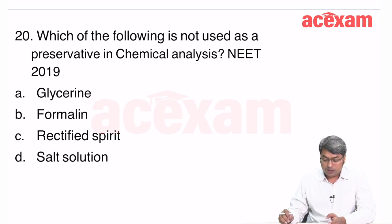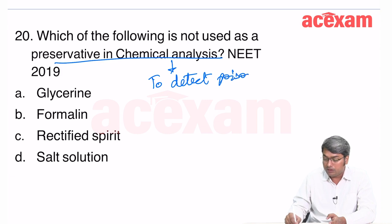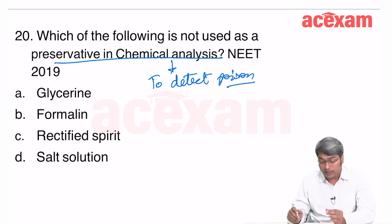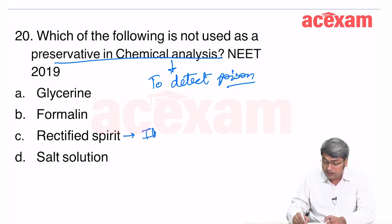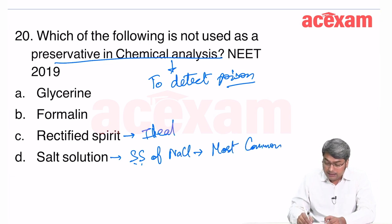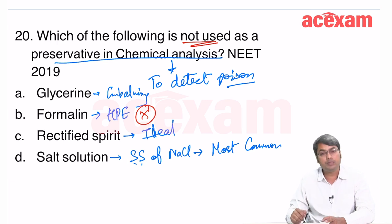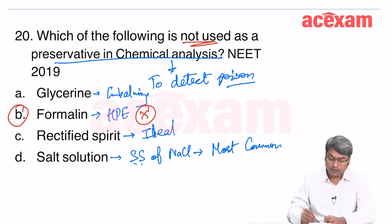Which of the following is NOT used as a preservative in chemical analysis for poison detection? Rectified spirit is the ideal preservative, saturated NaCl solution is most commonly used. Glycerin is used for embalming. Formalin is used for histopathology and is NEVER used for poison detection — so the answer is formalin.